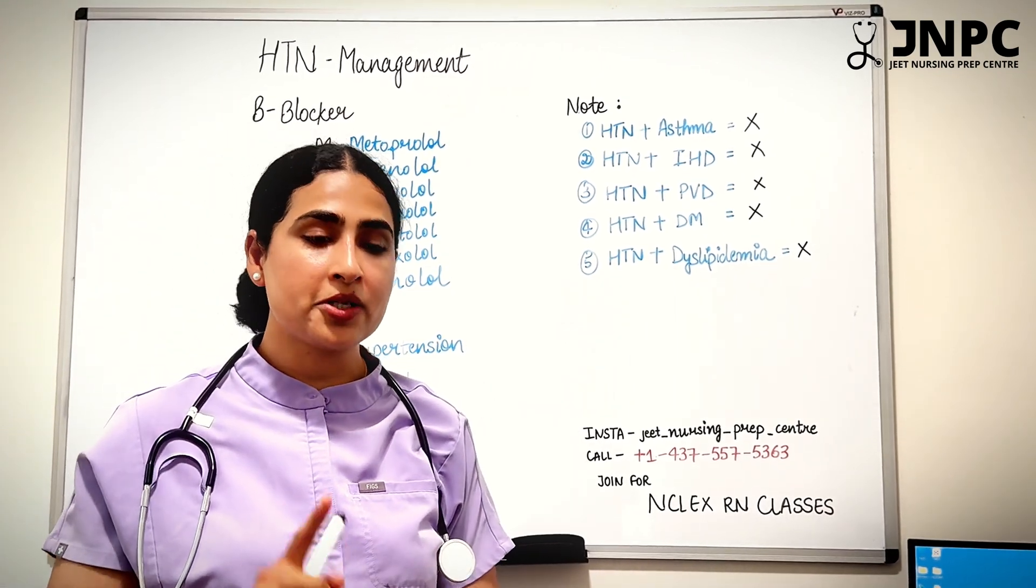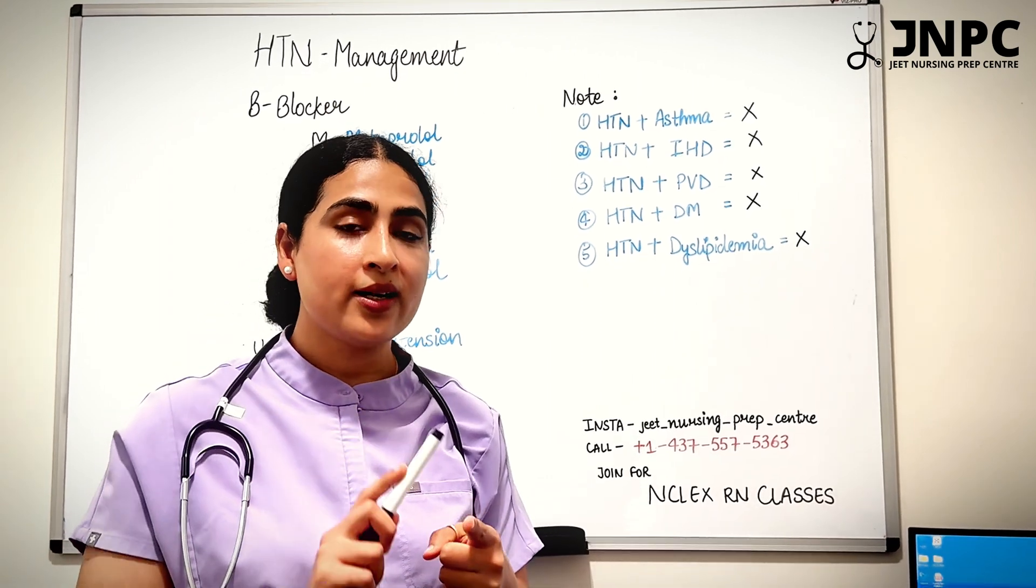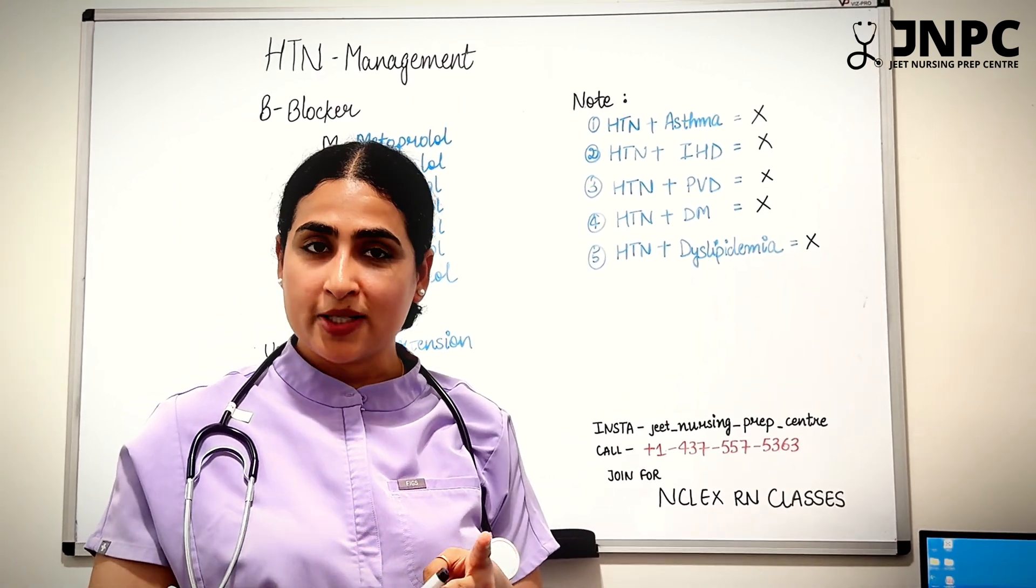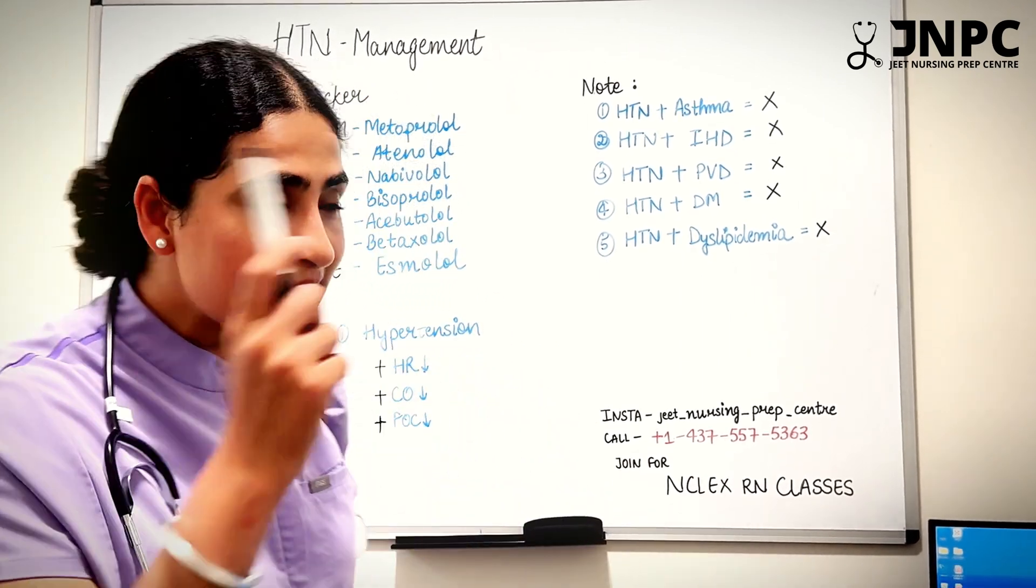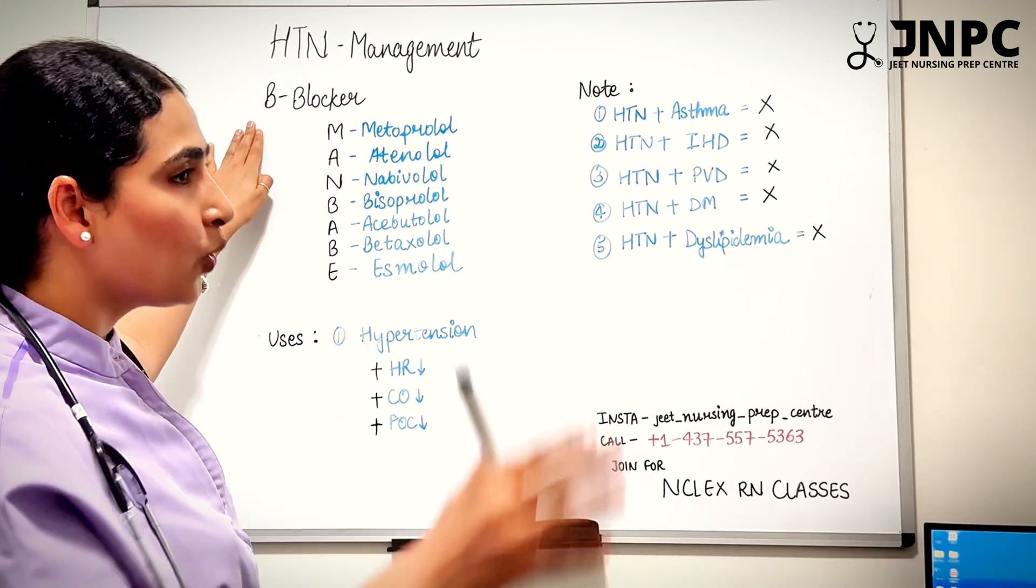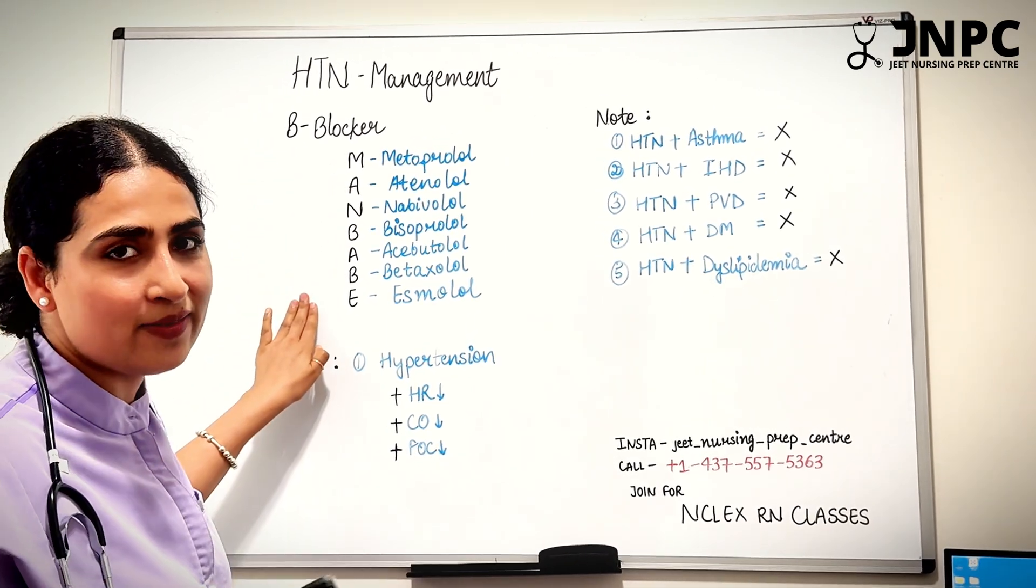We also know there are two types of beta blockers: beta 1 and beta 2. Tell me in the comment section which are beta 1 blockers and which are beta 2 blockers and what they actually do. That is your part. Let's discuss beta blockers as a whole. The best mnemonic, which is life-saving,